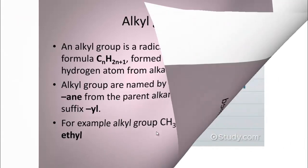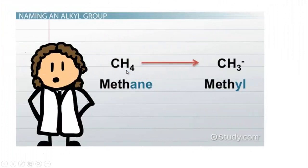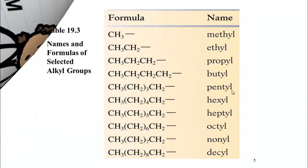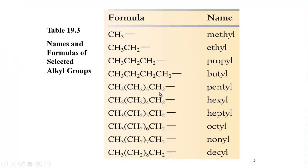When one hydrogen atom is removed from methane, it will become the methyl radical. There are different alkyl radicals. For example, propyl comes from propane when one hydrogen is removed. Propane means carbon-3: C₃H₈ according to the common general formula CₙH₂ₙ₊₂. So there will be C₃ and H₇, because one hydrogen is removed — it will produce the propyl alkyl radical. Similarly, butyl alkyl radical comes from butane in the same way.